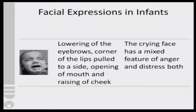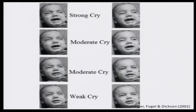The crying face has a mixed feature of anger and distress — anger in adults would be considered a basic emotion. Similarly, disgust will have a different expression; distress and anger both mix up, although the child is trying to express a negative feeling. Depending on certain situations, the child might come forward with different sets of expressions — ranging from weak cry, to moderate cry, to finally a strong cry.